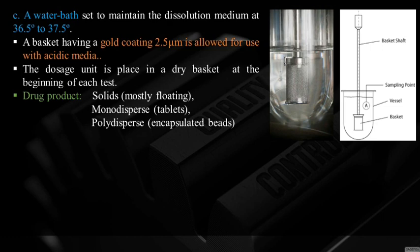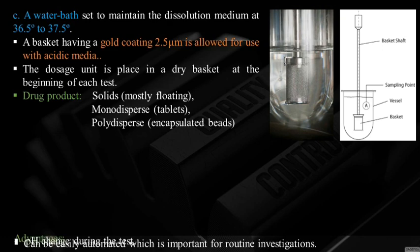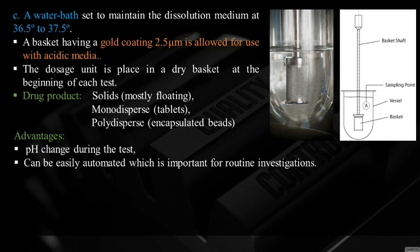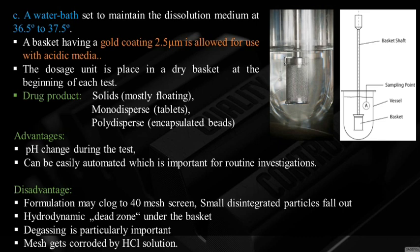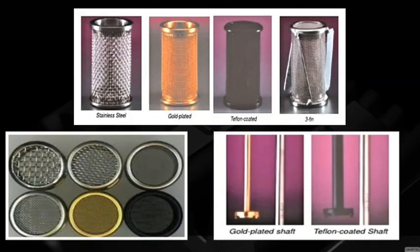Basket apparatus is suitable for solid, mostly floating, monodispersed tablets and polydispersed encapsulated beads. Advantages: pH changes during test can be done and the apparatus can be easily automated. Disadvantages: formulation may clog the 40-mesh screen, small disintegrated particles may fall out, a hydrodynamic dead zone may form under the basket, degassing is particularly important, and the mesh can corrode in hydrochloric acid. Different basket types include stainless steel, gold-plated, Teflon-coated, three-fin, with matching coated shafts.